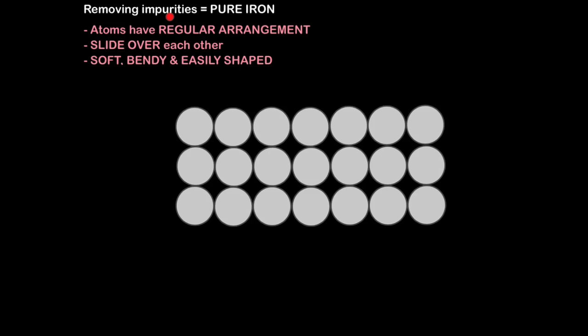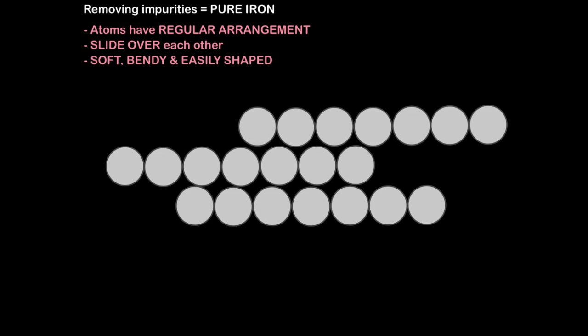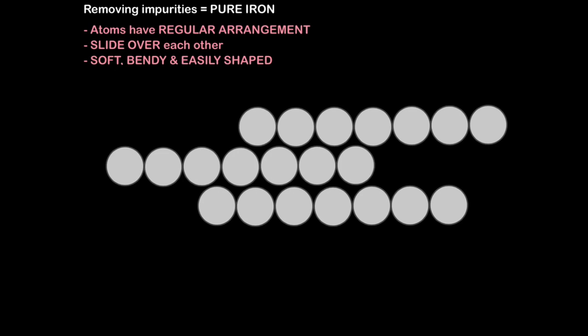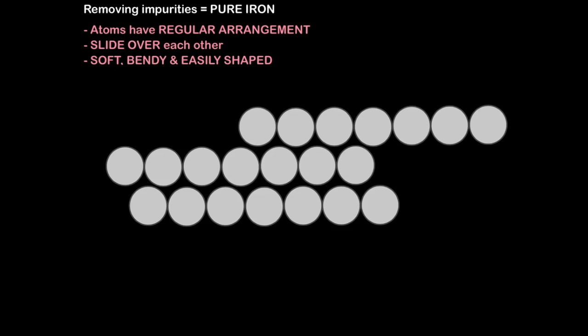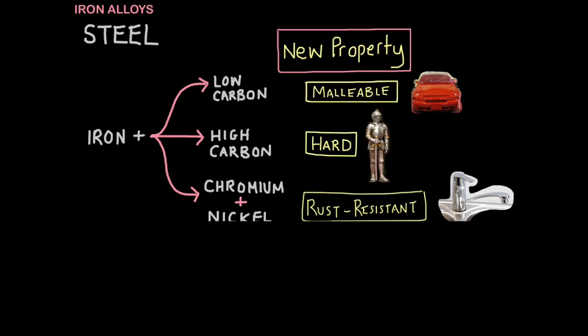So we can remove the impurities from iron to make pure iron. When you do this, the iron becomes soft, bendy, and very easy to shape, malleable. And that's because the atoms have a regular arrangement. What that means is they form straight layers sitting on top of each other. For that reason, these layers can just slide over each other very easily. That's why the metal is soft and easy to shape. But iron in that form isn't incredibly useful to us.